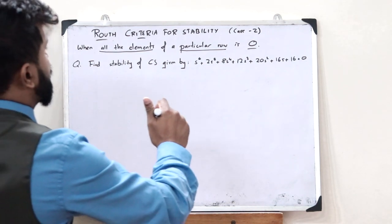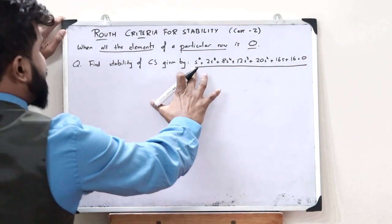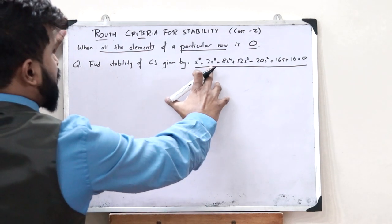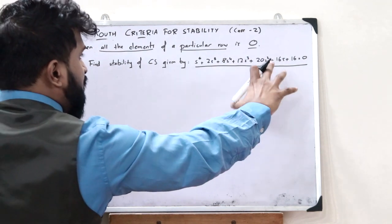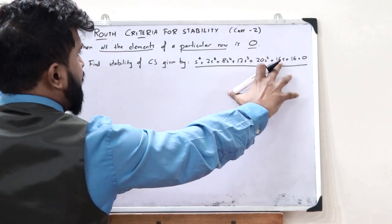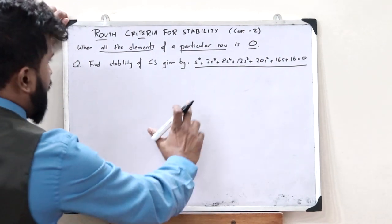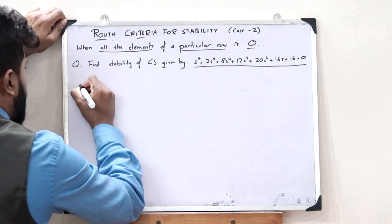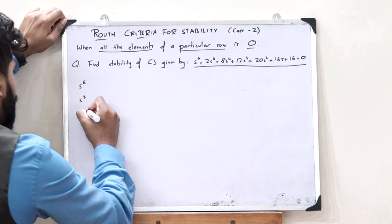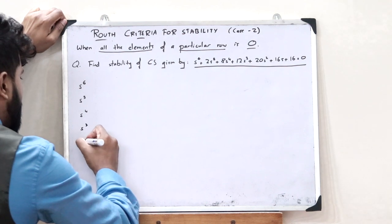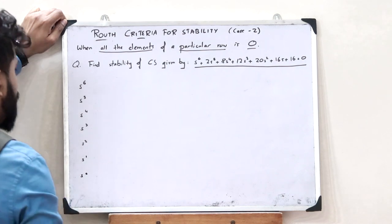Let us find the stability of a control system given by this characteristic equation: s⁶ + 2s⁵ + 8s⁴ + 12s³ + 20s² + 16s + 16 = 0. First let us find the Routh array. The maximum power of s is 6, so we have rows from s⁶ down to s⁰.